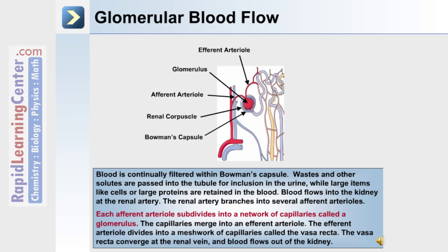Blood flows into the kidney at the renal artery. The renal artery branches into several afferent arterioles. Each afferent arteriole subdivides into a network of capillaries called a glomerulus. The capillaries merge into an efferent arteriole, which then divides into a meshwork of capillaries called the vasa recta. The vasa recta converge at the renal vein and blood flows out of the kidney.